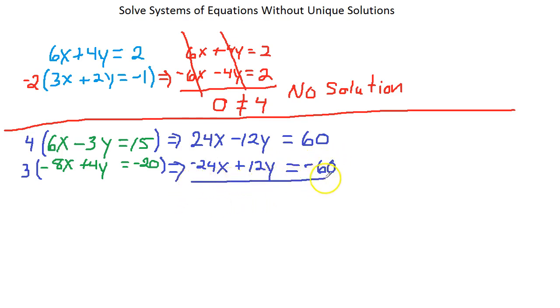Now, let's add the two equations together. This cancels, cancels, so we have 0, no variables left, equals 60 plus negative 60, 0.